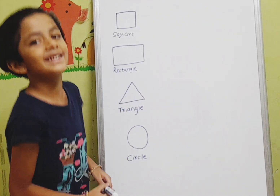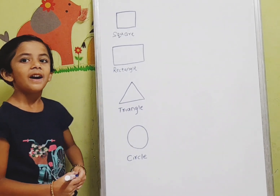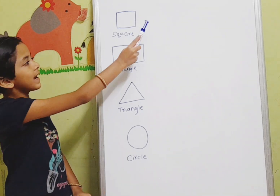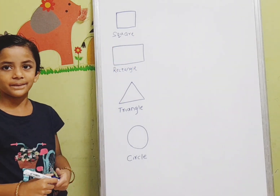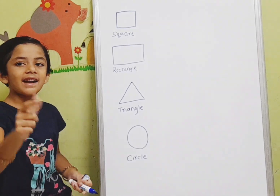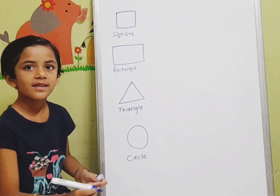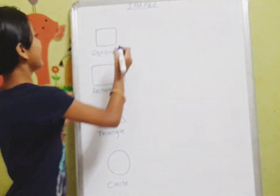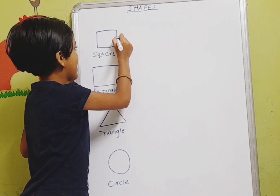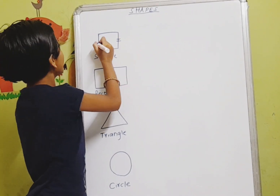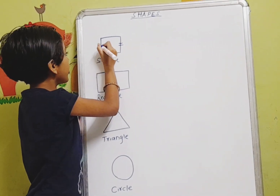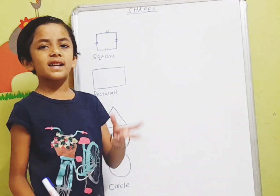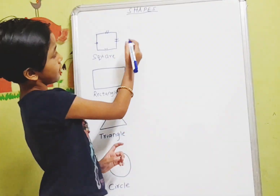See the shape and find out its sides and corners. Let's start, let's count: one, two, three, four. So there are four sides in a square.